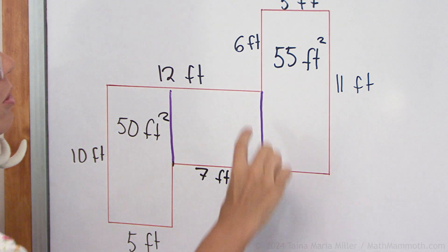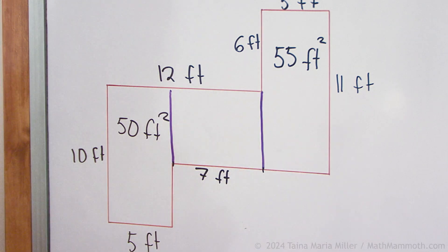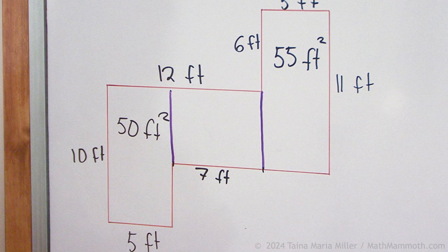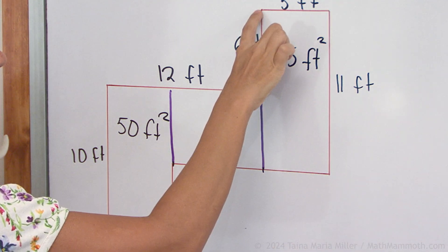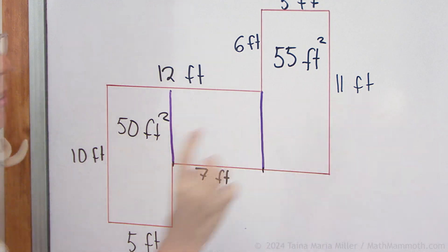And then the other unknown side, this one. Can you figure that one out? Look here, 11 feet and here 6. So this must be 5. And then the area, 7 times 5 is 35 square feet.